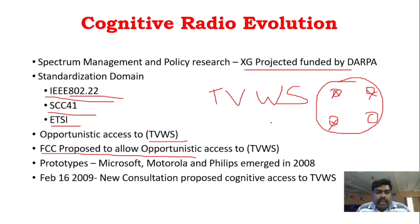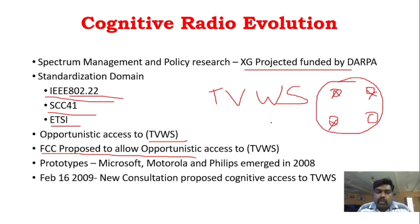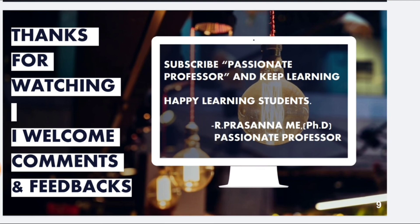This is the evolution of cognitive radio. First, there was TV spectrum management, then dynamic spectrum access, then spectrum management policy research — the DARPA project — then standardized domains with three work groups, then a lot of prototypes evolved, and during 2009 cognitive access was authorized. So now you understand the evolution of cognitive radio, as well as software-defined radio. Thank you, students. Subscribe to Passionate Professor and keep learning.